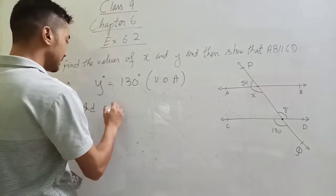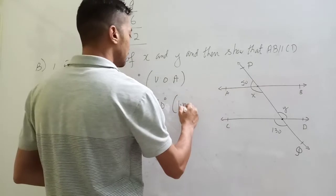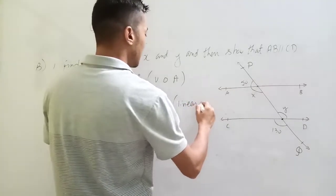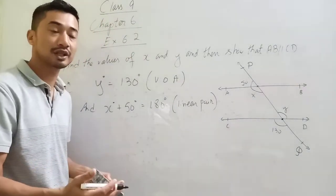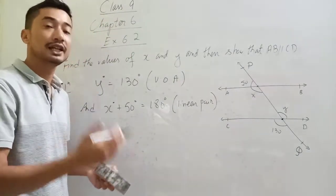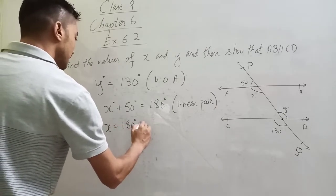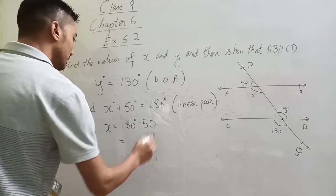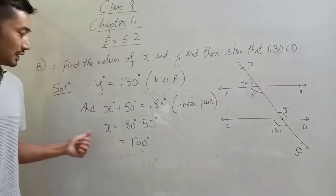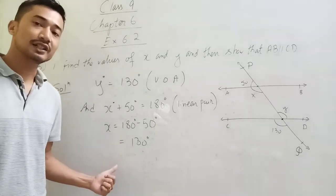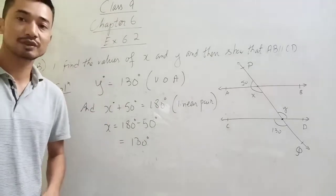Now, x degrees plus 50 degrees equals 180 degrees because they make a linear pair, and the sum of a linear pair is equal to 180 degrees. So x equals 180 minus 50, which gives x equal to 130 degrees.